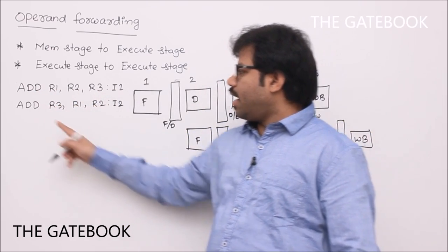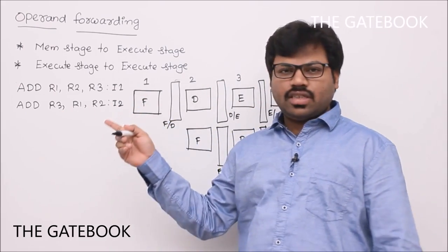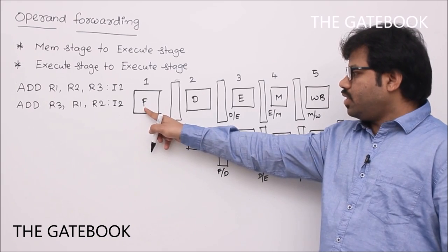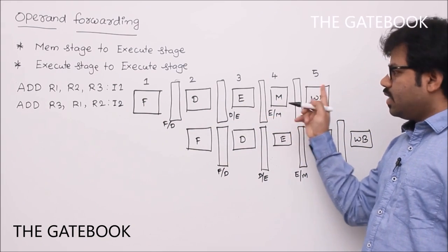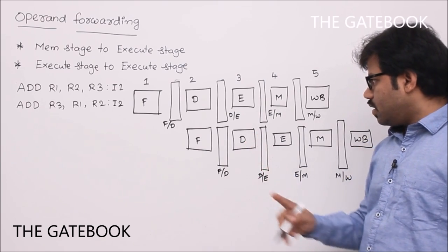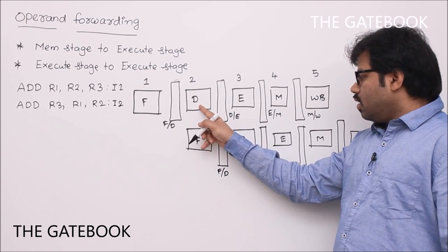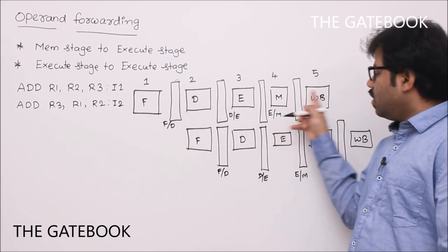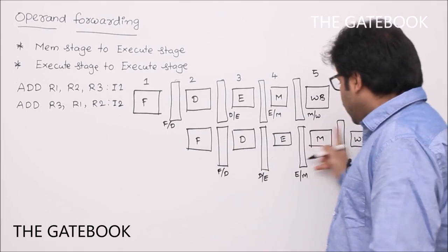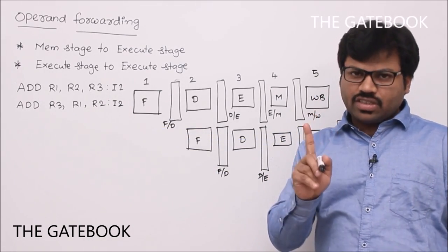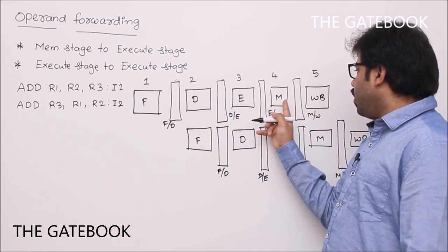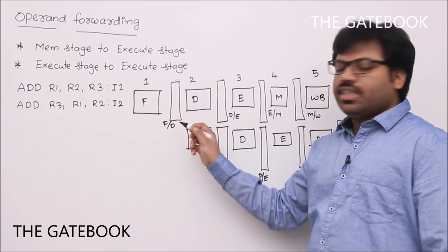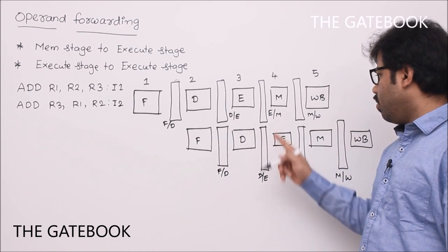Let's take instructions 'add R1, R2, R3' and 'add R3, R1, R2' and show what happens in the pipeline using a multi-cycle diagram with stages: Fetch, Decode, Execute, Memory, Write-back. These stages appear twice in the diagram — once for instruction 1 and once for instruction 2 — but physically there is only one fetch stage, one decode stage, one execute, one memory, one write-back.